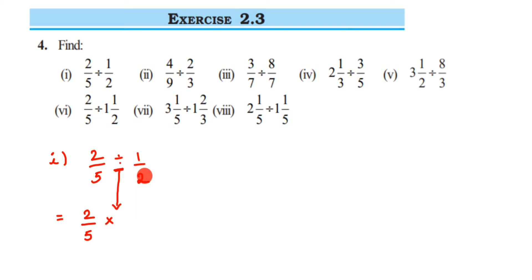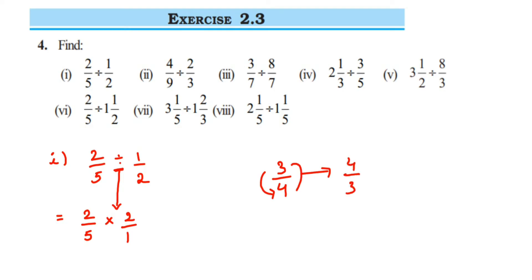If you don't know what a reciprocal is, it's very simple — you just interchange the numerator and denominator. For example, if you have 3 by 4, its reciprocal will be 4 by 3. You just interchange those two numbers, numerator and denominator, and that becomes the reciprocal.